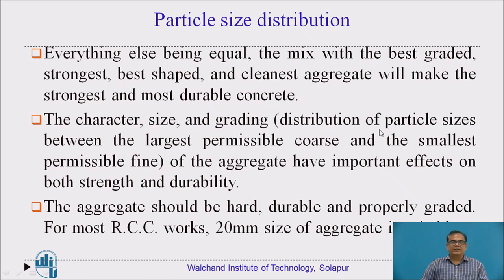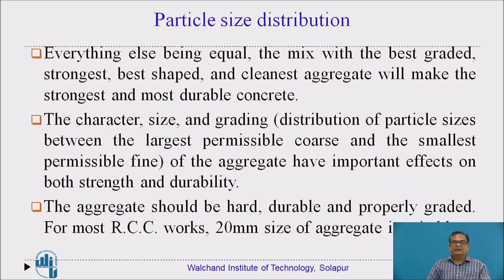One more important thing is particle size distribution. Sand and coarse aggregate must be well graded, good shaped, clean, without any impurities like soil and dust particles. The grading should be of good quality. Particle size distribution is the distribution from the largest permissible coarse to the smallest permissible fine of that particular aggregate. Equal distribution should be there. Generally 20 mm aggregates are used for RCC works. Aggregate should be hard, durable, and properly graded.